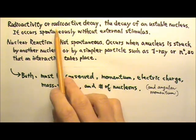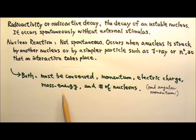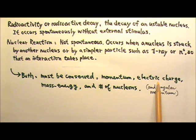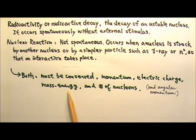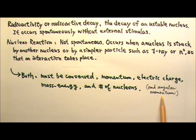For both radioactive decay and nuclear reaction, certain things must be conserved in these processes. Momentum, electric charge, and energy mass are all conserved. And this thing called angular momentum should also be conserved, although we do not learn about angular momentum in this course.